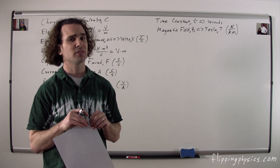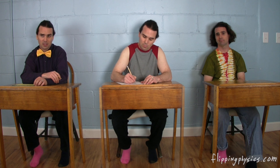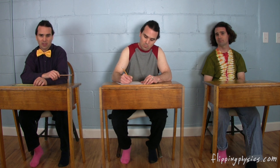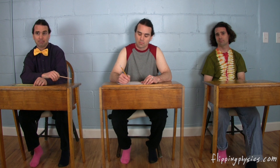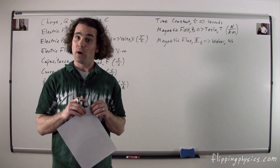What are the symbol and dimensions for magnetic flux, Billy? Magnetic flux uses the same symbol as electric flux, only with a capital B instead of a capital E as a subscript, and the dimensions for magnetic flux are Webers, or Wb. Bobby, what is a Weber? A Weber is a Tesla times a meter squared.